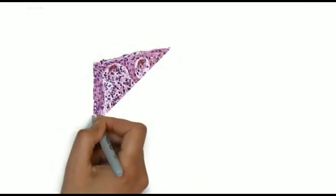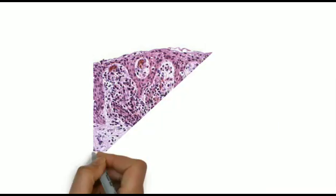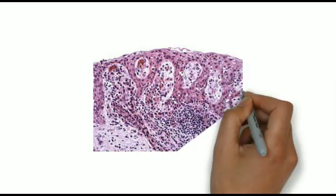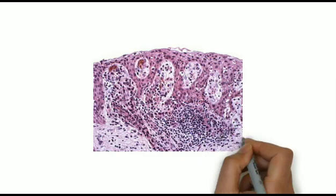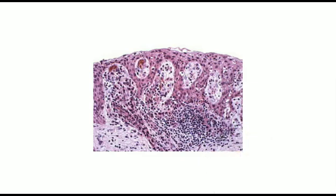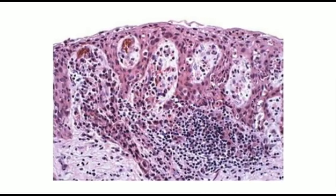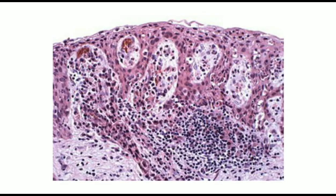Periapical cysts are lined by non-keratinizing squamous epithelium that may show elongated rete ridges sometimes forming Roman arches, called arcading patterns of epithelium. Epithelium may also demonstrate exocytosis, spongiosis, or hyperplasia.